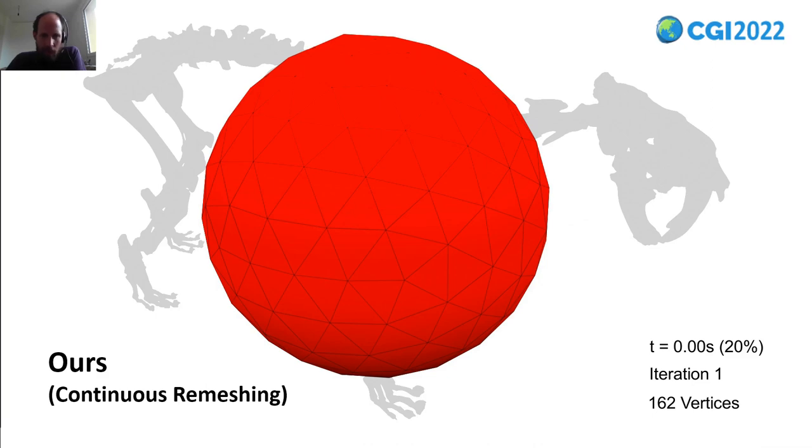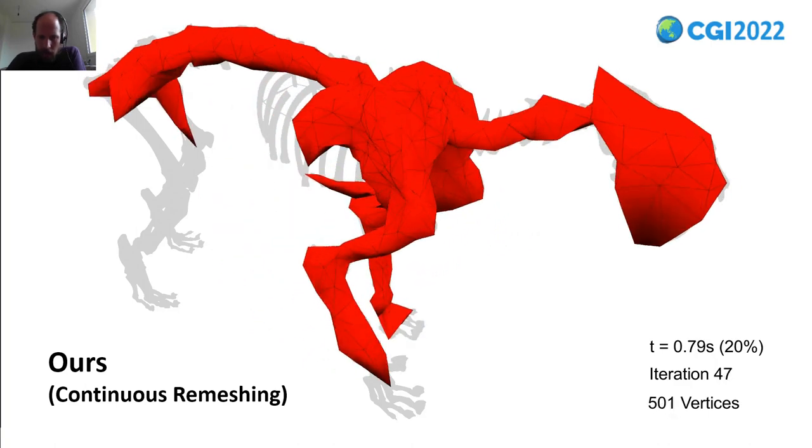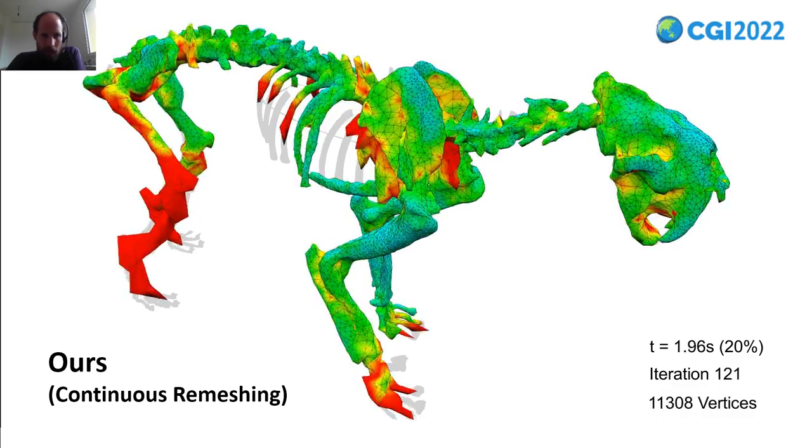Before we dive into the details of our method I will show you how it performs on the previous example. Again we start with large triangles and now you can see the vertex count is continuously increased. So this is the continuous remeshing. Now I stopped after two seconds.